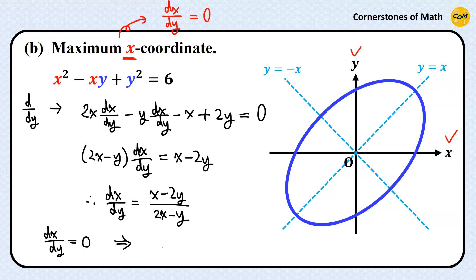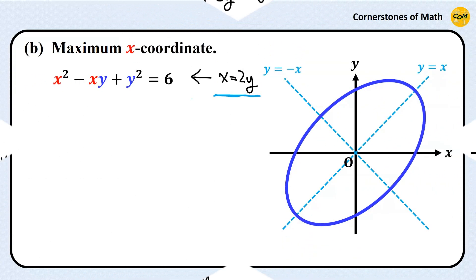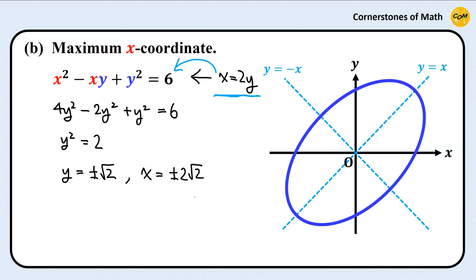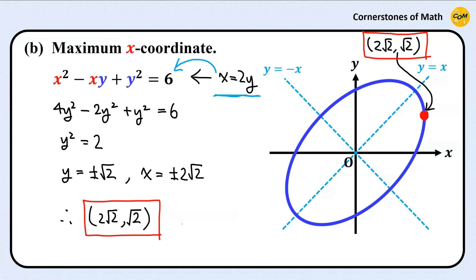Therefore, when dx over dy equals 0, we have x equals 2y. Substituting into the equation of the ellipse, now in terms of y, we have 4y squared minus 2y squared plus y squared equals 6. So, y squared equals 2, so y equals plus or minus square root of 2. And by x equals 2y, x equals plus or minus 2 square root of 2. Therefore, the point with maximum x-coordinate is (2 square root of 2, square root of 2). And of course, the point with minimum x is (minus 2 square root of 2, minus square root of 2).